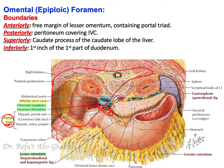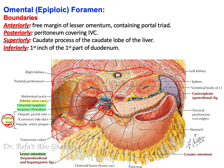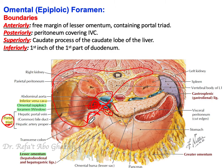Moving posteriorly, posterior to this foramen there is the inferior vena cava — a large vein that is covered by peritoneum. The inferior vena cava with its peritoneal membrane is considered the posterior border of the omental foramen. Superiorly, the foramen is bounded by the caudate process of the liver. Inferiorly, the epiploic foramen is bounded by the first part of the duodenum.